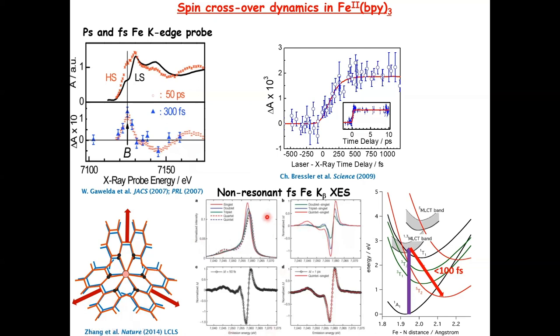Later on, the group of Kelly Gaffney at the LCLS free electron laser implemented X-ray emission. X-ray emission is sensitive to the spin state. Using model compounds, they could conclude that during the cascade, one of the triplet states was populated as an intermediate step towards a high spin state.